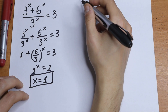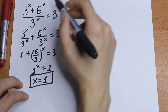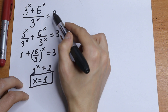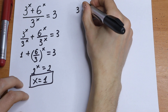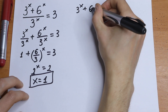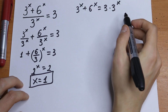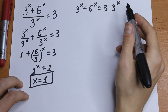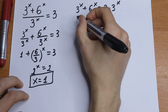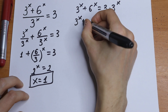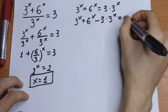I want to suggest a second method to solve this. We have 3 to the power x plus 6 to the power x over 3 to the power x equal to 3. So we can multiply both sides by 3 to the power x: 3 to the power x plus 6 to the power x equals 3 times 3 to the power x. We can do this for sure. So we bring this product to the left: 3 to the power x plus 6 to the power x minus 3 times 3 to the power x equal to 0.